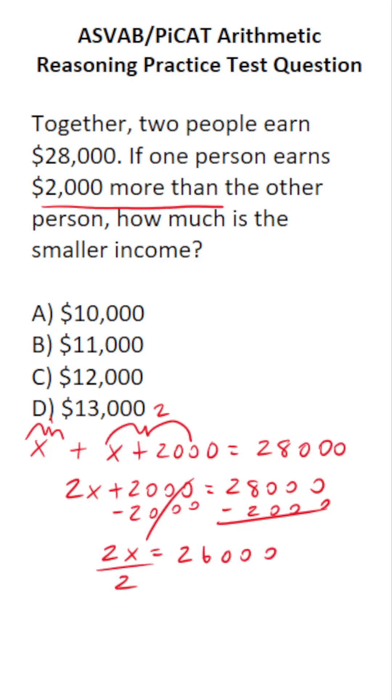Now we're going to divide both sides by 2. This crosses out, leaving you with X over here. 2 divided by 2 is 1, 6 divided by 2 is 3, and just bring down those zeros. So X is $13,000.